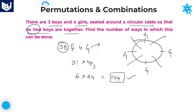Whenever these kinds of problems are given, first you need to arrange the girls, and after that, whatever places are left over — suppose if there are four boys in the question, you need to arrange all four boys in four places in 4 factorial ways. Here the answer for this question is 144. I hope you understand the session. Thank you very much for watching.